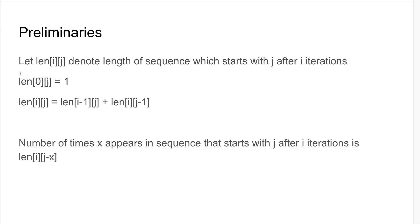Let's let len[i][j] denote the length of the sequence which starts with j after you apply i iterations of the algorithm. In this case, if you apply 0 iterations, just j itself. And otherwise, you get this recursive formula.